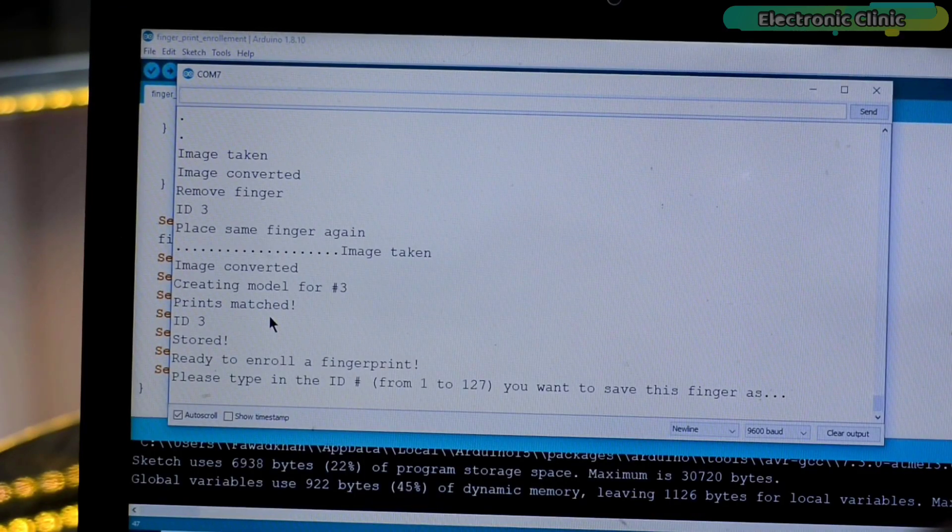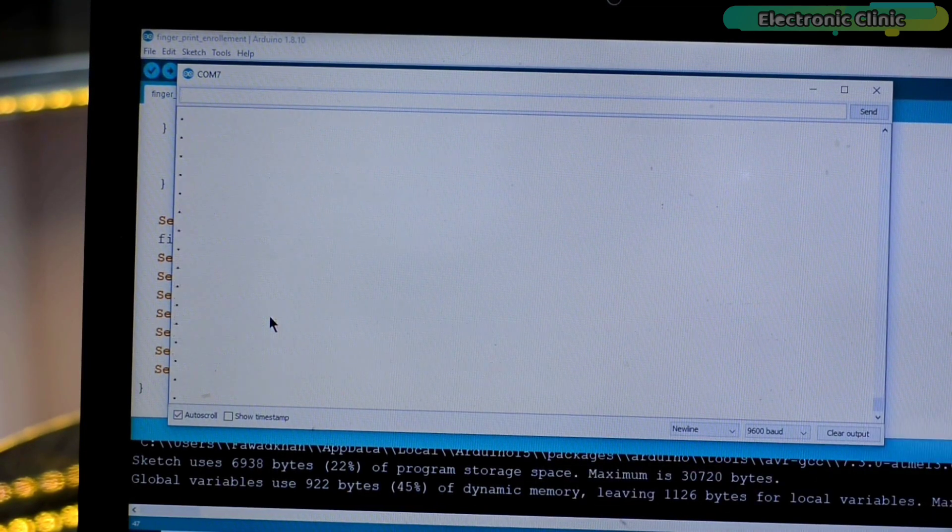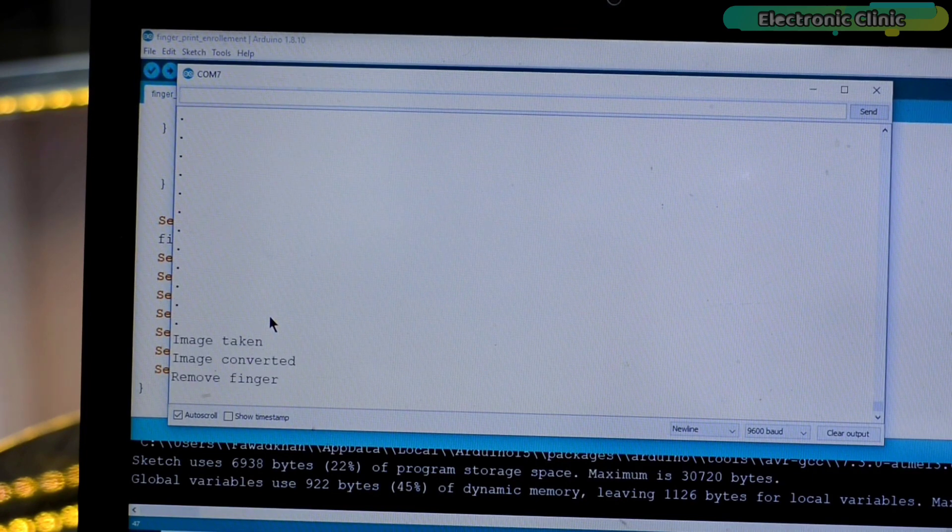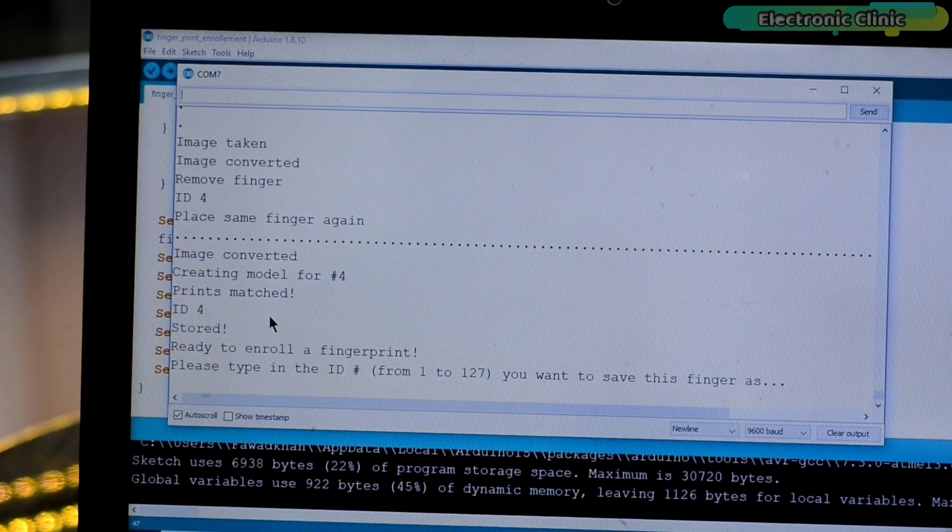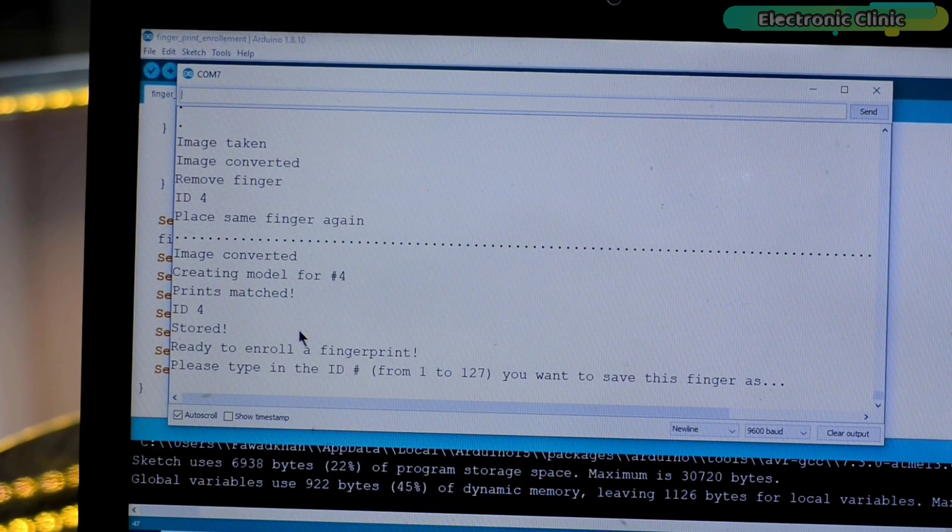Now I'm going to repeat the same steps for another finger and this time I'm going to use 4 as the ID number. You can see I have successfully enrolled two fingers. So I'm going to use one finger to open the lock and another finger I will use to close the lock.